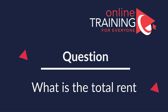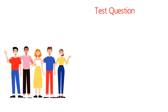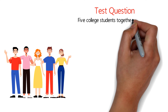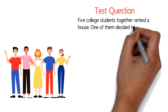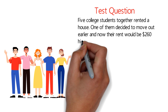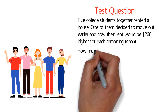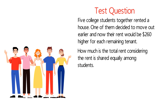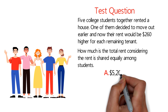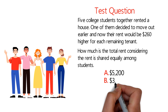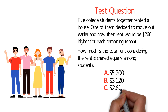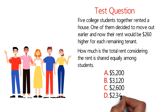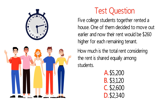Here's an interesting question you may need to know not just for the test but also if you're trying to rent a house. Five college students together rented a house. One of them decided to move out earlier and now the rent would be $260 higher for each remaining tenant. What is the cost of the total rent, shared equally among students? Choices: A, $5,200; B, $3,120; C, $2,600; D, $2,340.